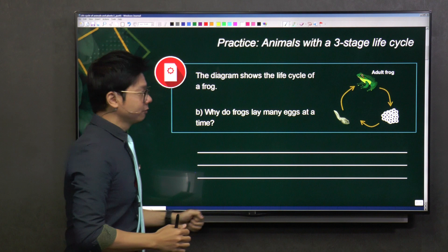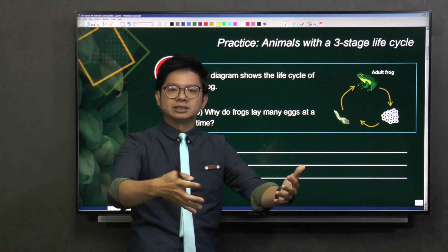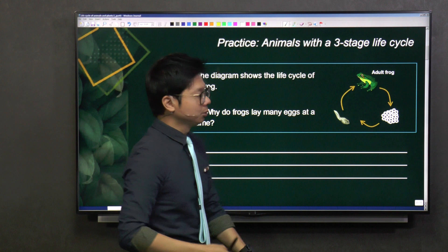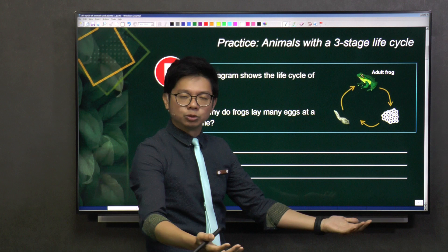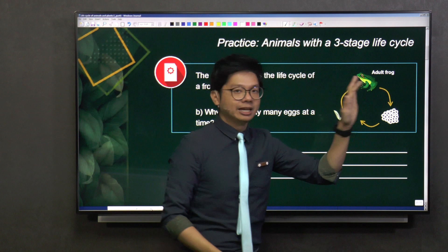Whereas for frogs, there are a lot of predators that will eat them. So the chance of them surviving is definitely much lower than that of a human being. So what do they need to do in order to ensure the continuity of their kind, to make sure that they do not go into extinction?